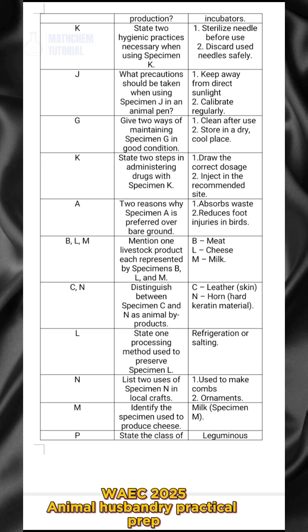The two reasons why specimen A is preferred over bare ground are: one, it absorbs waste; and two, it reduces floor injuries in birds.